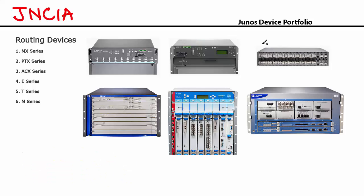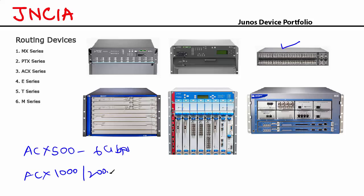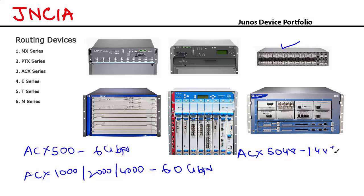The ACX series are temperature-hardened devices mainly designed for mobile backhaul and service provider networks. The ACX500 has a capacity of 6 Gbps. The ACX1000, 2000 and 4000 series all have a capacity of 60 Gbps — though they differ in interfaces and slots. The ACX5000 series includes the ACX5048 at 1.44 Tbps and the ACX5096 at 2.88 Tbps.